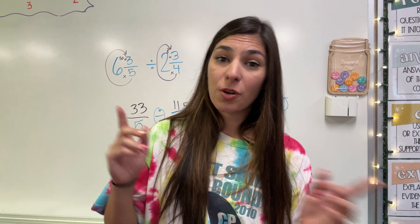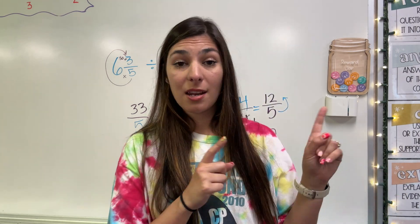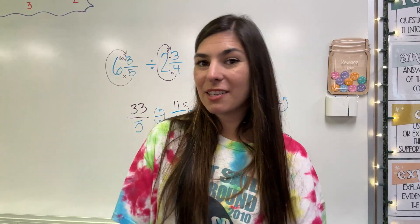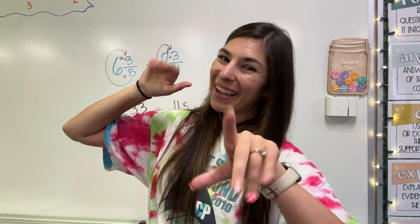So six and three fifths divided by two and three fourths equals two and two fifths. So that's why it's important to know how to change your mixed numbers into improper fractions and improper fractions into mixed numbers. If you liked this video or found it helpful, please give a big thumbs up. Don't forget to subscribe and I'll see you in the next one. Bye guys.